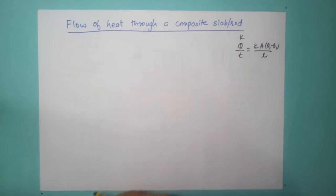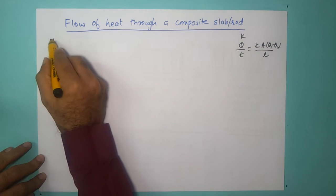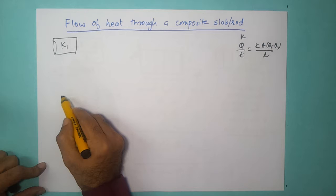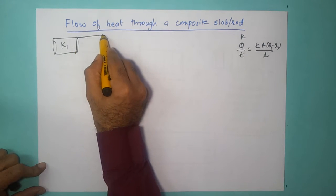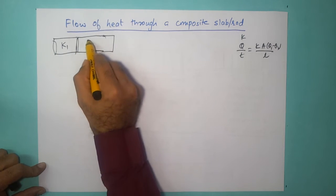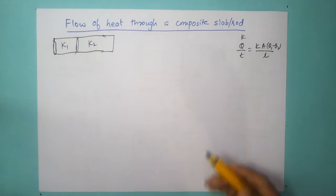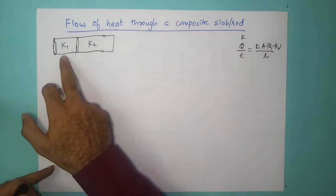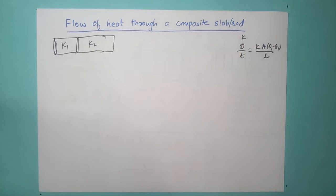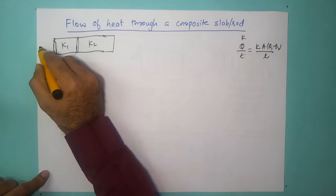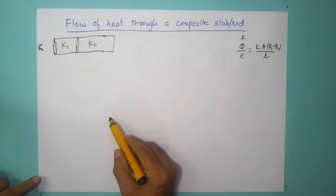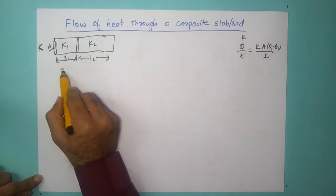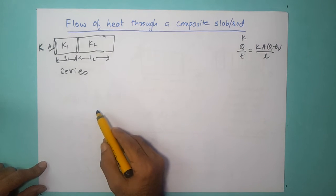After having this discussion, let's look at a composite slab. In our previous discussion we assumed a rod having thermal conductivity K with the same material throughout. But there are situations where we may have a rod with conductivity K1 connected to another rod with conductivity K2. The objective of this video is to find the effective or equivalent thermal conductivity of both rods put together. We call this a composite slab or composite rod. We assume cross-sectional area A, length L1 for the first rod, and L2 for the second. This is a series connection.